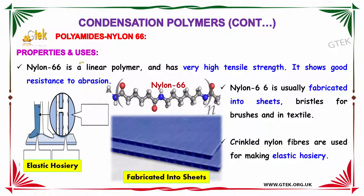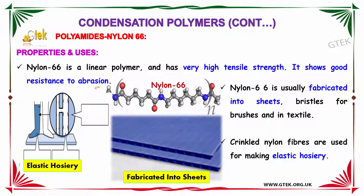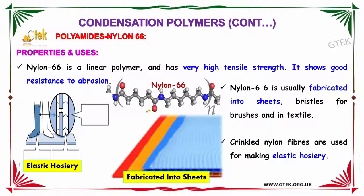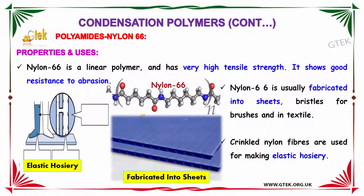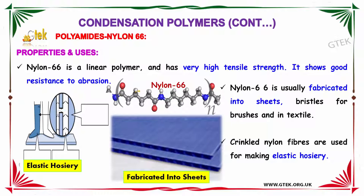Nylon 66 is a linear polymer and has very high tensile strength. It also shows good resistance to abrasion. These are among the major properties of Nylon 66. It is usually fabricated into sheets, bristles for brushes, and used in textile industries. Additionally, crinkled nylon fibers are used in the making of elastic hosiery.